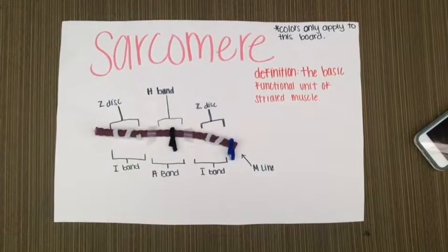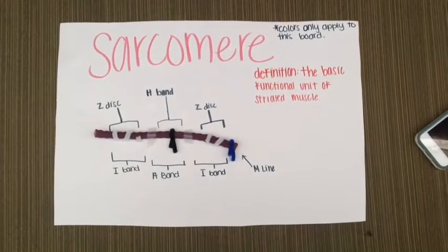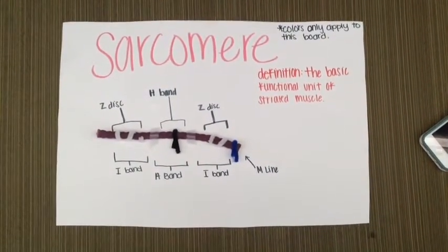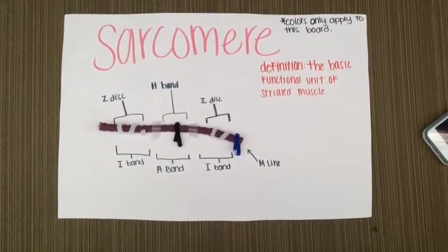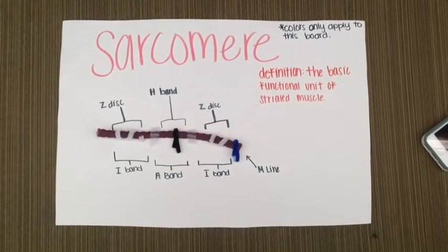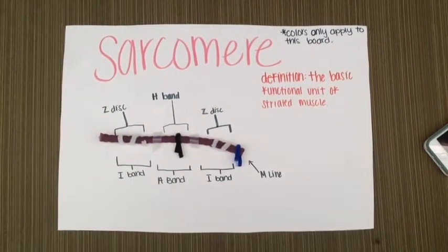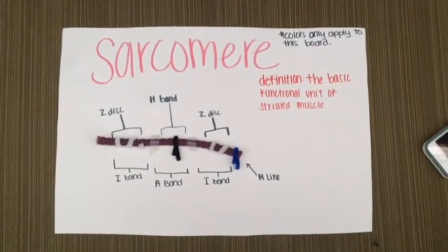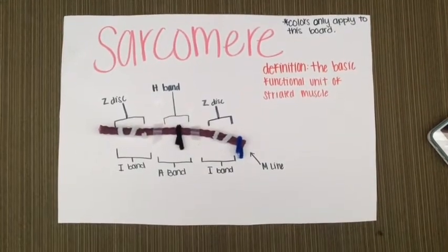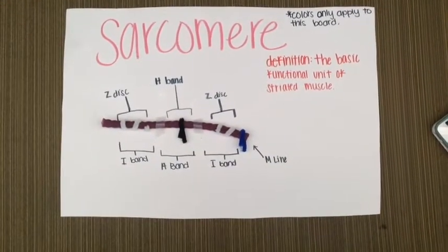This is a sarcomere. A sarcomere is the basic functional unit of striated muscle. It is made up of Z-disks, I-bands, A-band, H-band, and an M-line. It is made up of myofilaments and myofibrils.